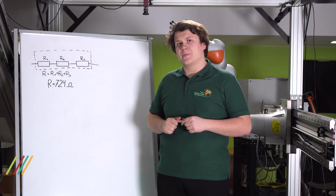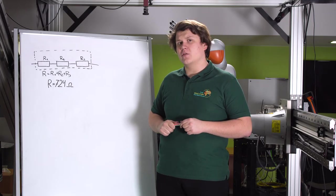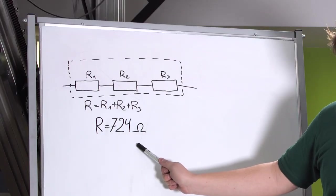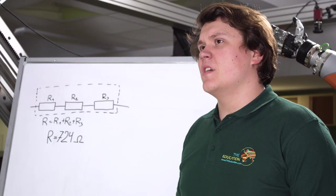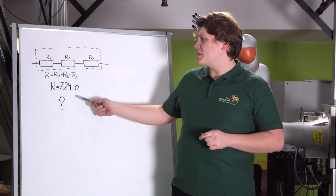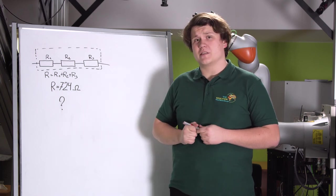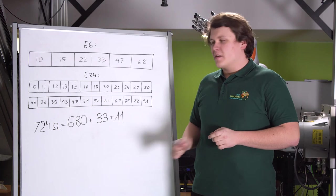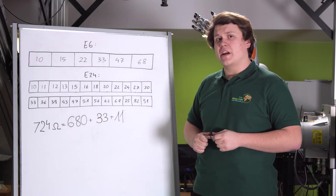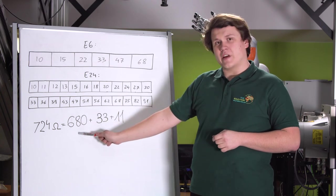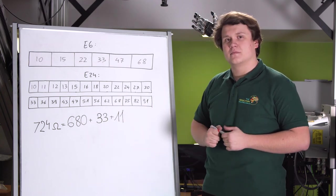Before we go into the description of elements, let's talk about series of values. Let's suppose that we have calculated that in our circuit we need a resistor of 724 ohm resistance. First of all we have to answer the question: are such elements available? The answer is no. We have to realize that all values of resistances are systematized, so there is no resistor of 724 ohms. A 724 ohm resistor can be created from three resistors connected in series: 680, 33, and 11 ohm.